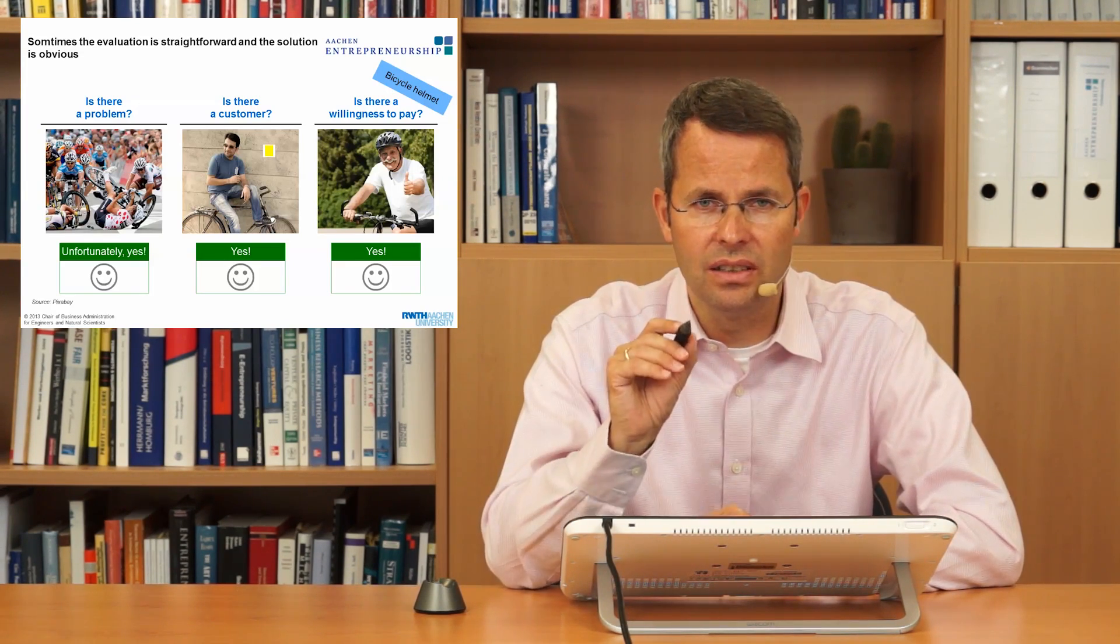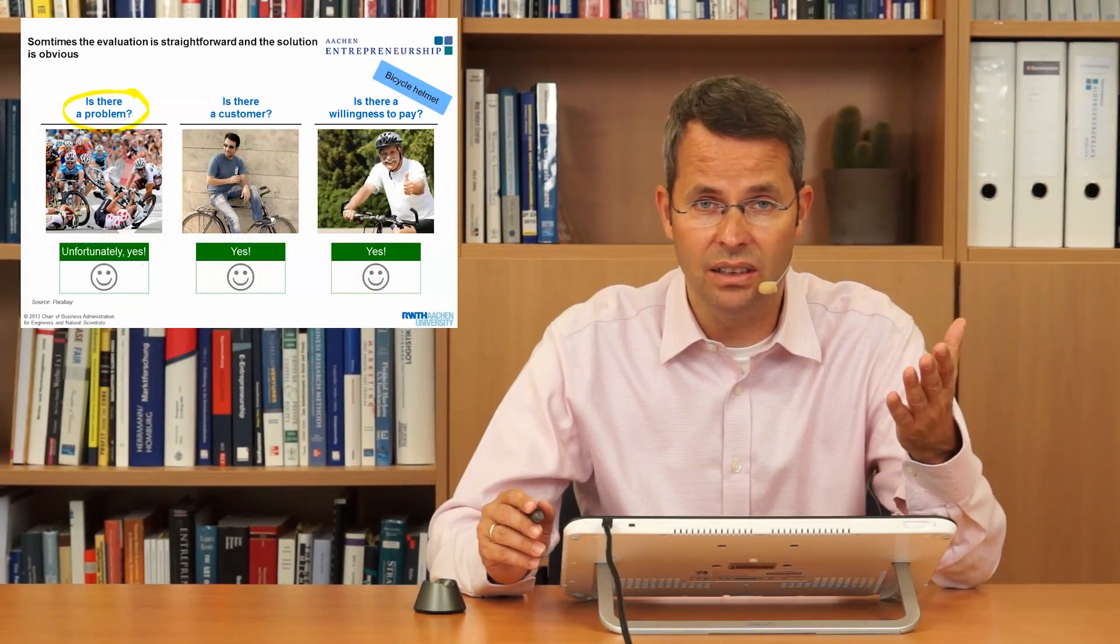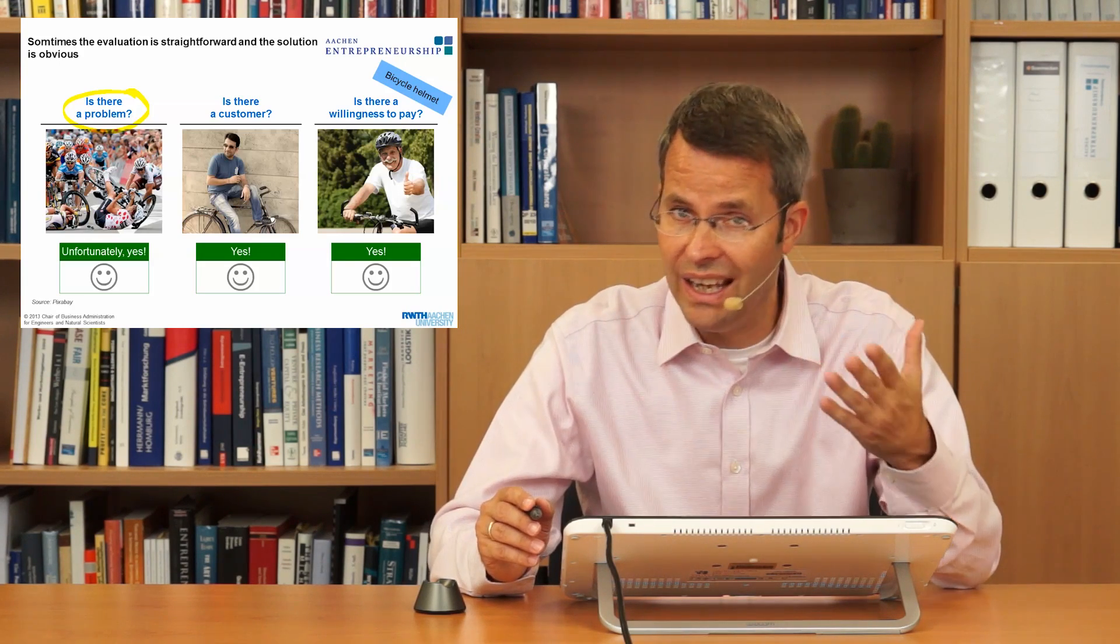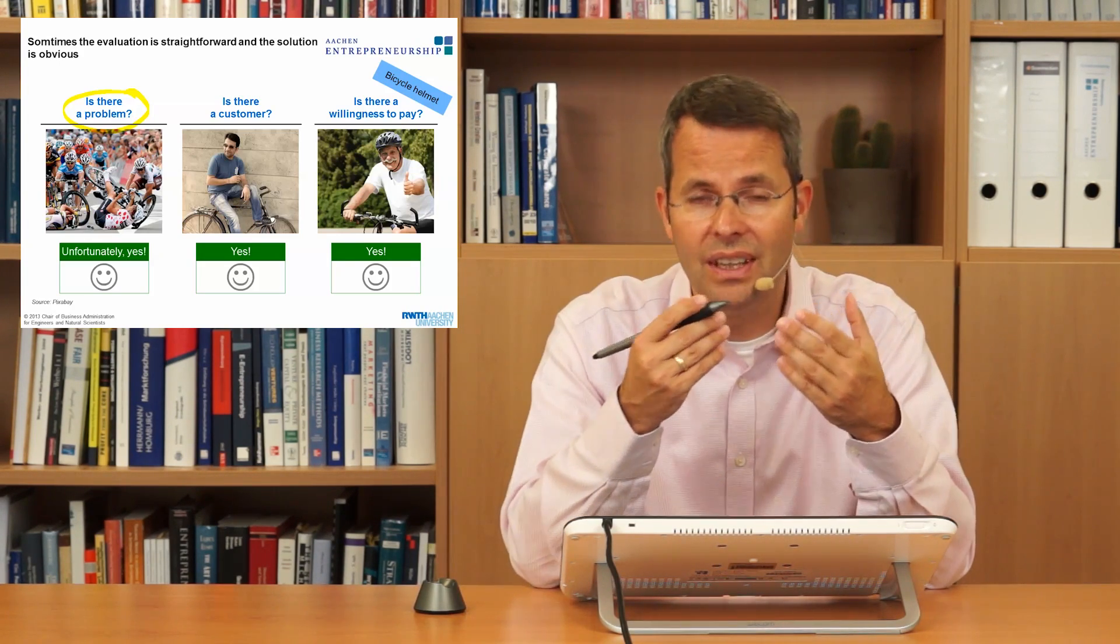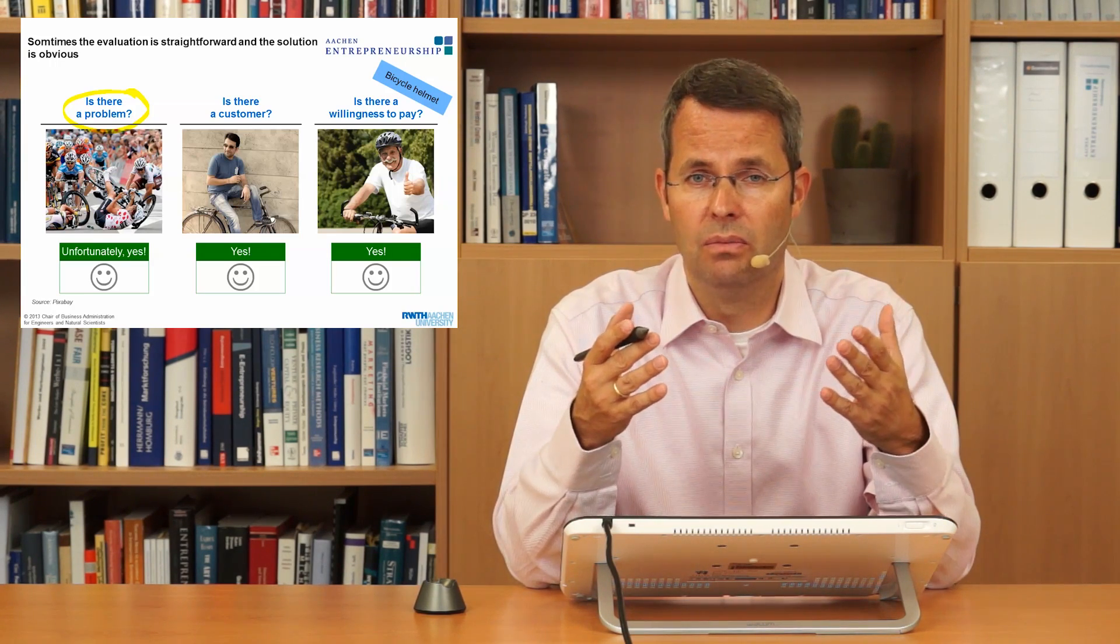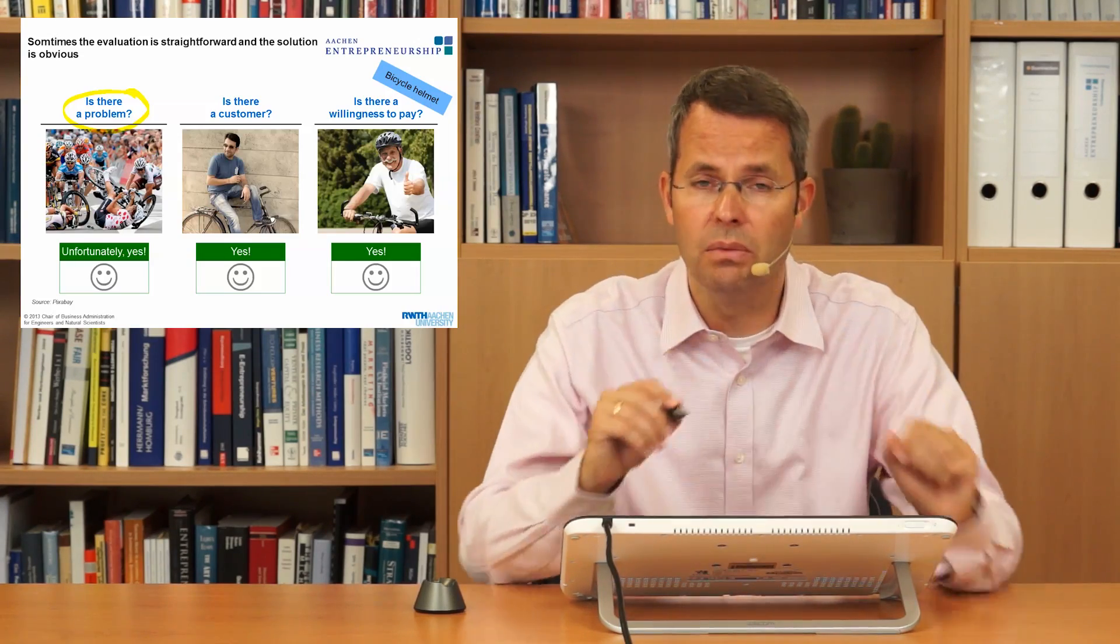The first question is, is there a problem? Taking the example of the bicycle helmet, well, if you crash with your bicycle, the most valuable thing you want to protect is your head. So there is a problem, there is a need to protect your head with something. And the best thing to do that is a helmet.